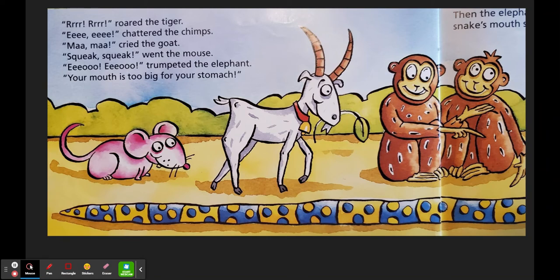Each of the animals said thank you to the elephant in their own way. Here's what the tiger said. Roar! Here's what the chimps said. Eee! Eee! Here's what the goat said. Ma-a-a-a! Here's what the mouse said. Squeak! Squeak! And the trumpeting of the elephant sounded like this. Eww-oh! Eww-oh! Your mouth is too big for your stomach.